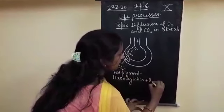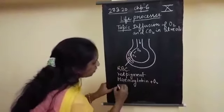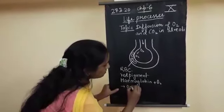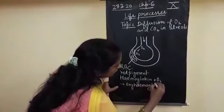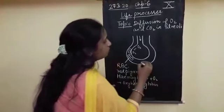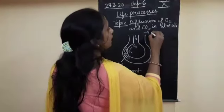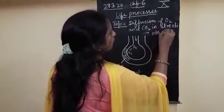So this O2 is being taken up by the hemoglobin molecule present inside the RBC and once this oxygen molecule is combining with hemoglobin it is forming the compound known as oxyhemoglobin and this oxyhemoglobin will move to the other parts of the body.